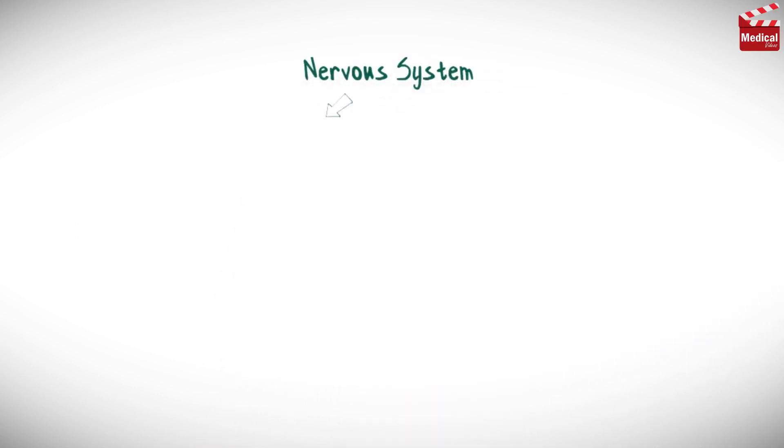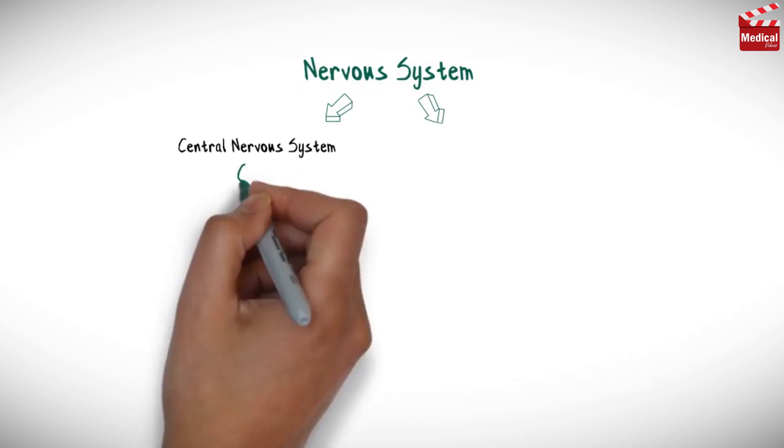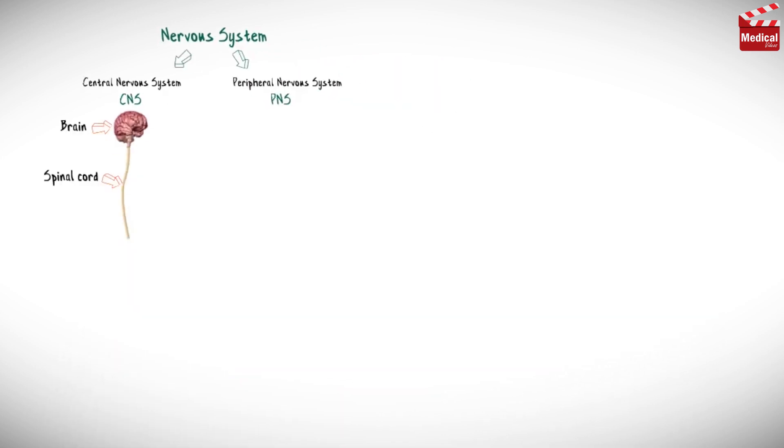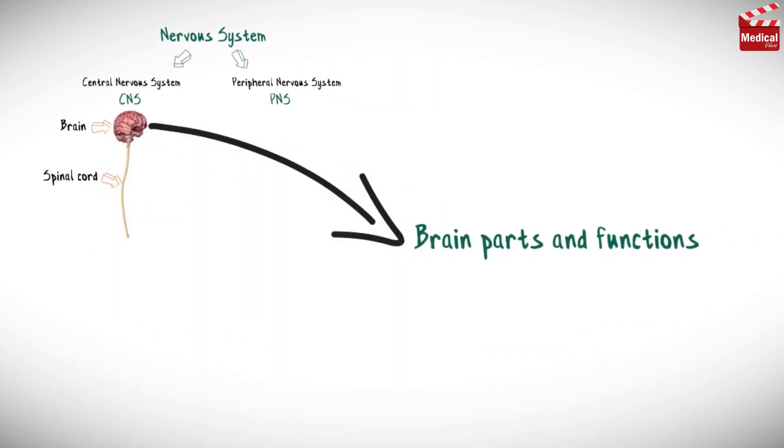We already know that the nervous system is divided into central nervous system and peripheral nervous system. The CNS includes the brain and spinal cord. In this video we'll talk about the brain parts and functions.